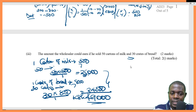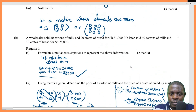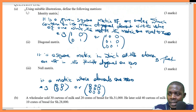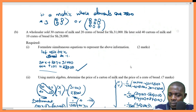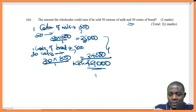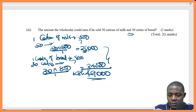That is Roman number 3. Roman part B covered the simultaneous equation, and part A covered explanations of identity and diagonal matrix. That is what you ought to have done to earn yourself 20 marks.